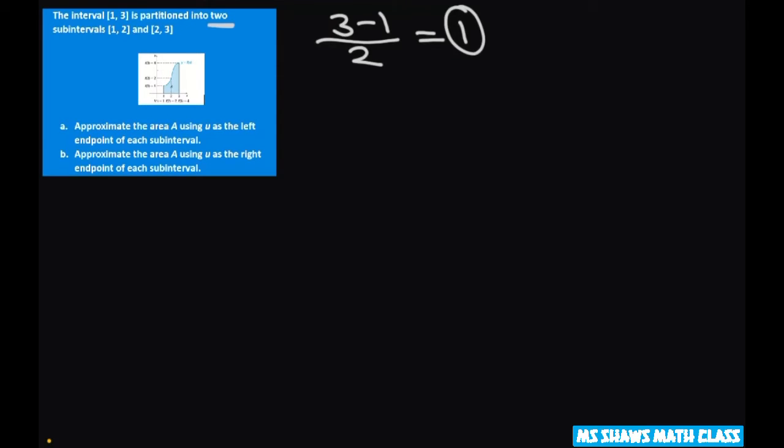And so the area for part A is going to be approximately f of 1 times 1. You always multiply it by that. Plus f of 2 times 1. And this is going to give you 1 times 1, which is just 1, plus 2 times 1, so that's just plus 2. So the answer is 3.